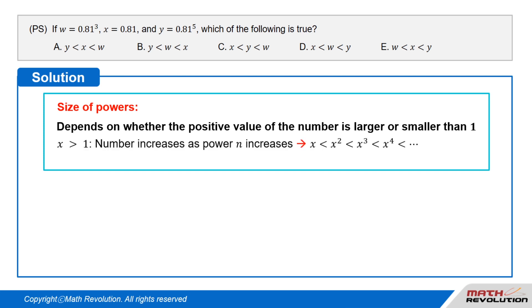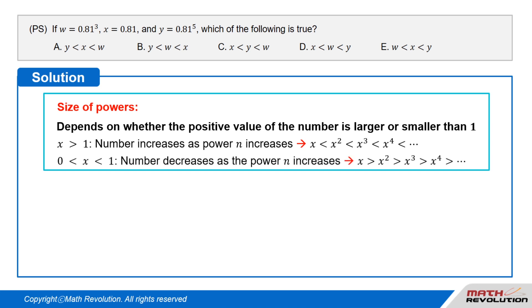If X is greater than 1, then the number increases as the power n increases: X is less than X squared, is less than X cubed, is less than X to the power of 4, is less than, and so on.